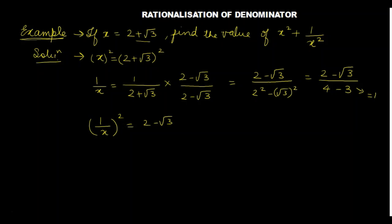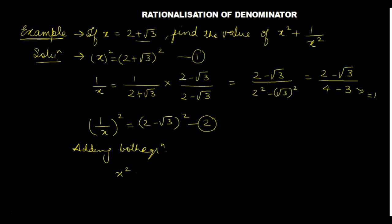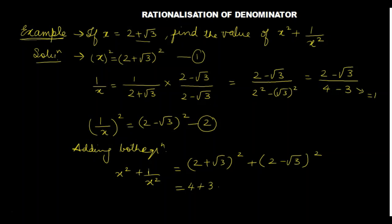Now let's do 1 by x whole square — it is equal to 2 minus root 3 squared. This is equation 1 and this is equation 2. We will add both the equations. So x square plus 1 by x square: we open the bracket using a plus b squared — a square plus 2ab plus b square — giving 4 plus 3 plus 2 into 2 into root 3, plus 4 plus 3 minus 2 into 2 root 3. The 2ab terms cancel because they are opposite, and 4 plus 3 is 7, so 7 plus 7 equals 14. So 14 is your answer by the first method.